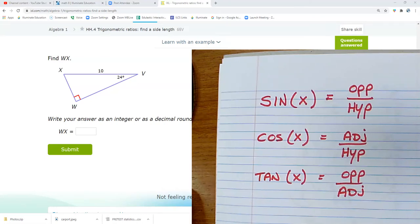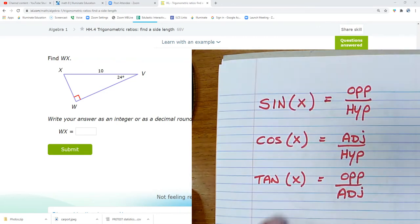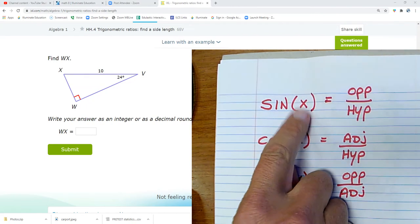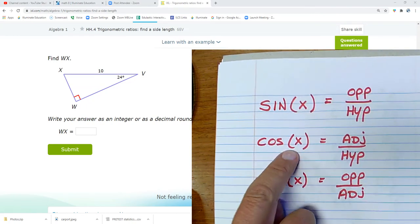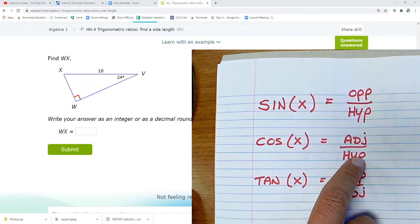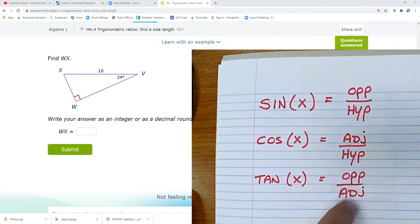All right, hey this is Mr. Barr and I'm going to do an IXL that deals with trigonometric ratios. Find a side length. So here are the basic three trigonometric functions. The sine of X, which is the angle, equals the opposite side over the hypotenuse side. Cosine of X equals adjacent over hypotenuse. Tangent of X equals opposite over adjacent.